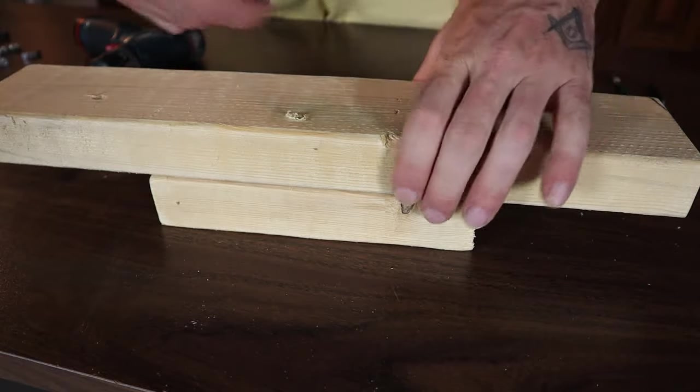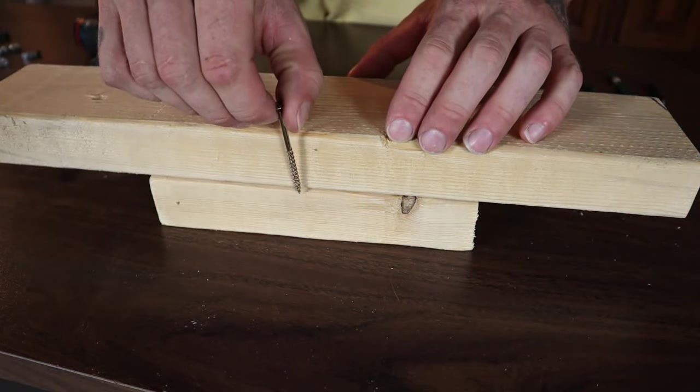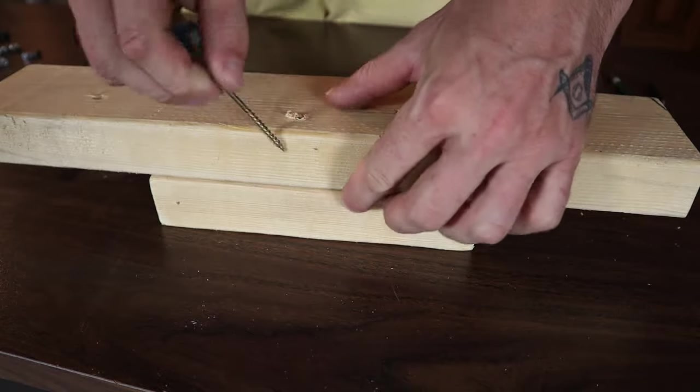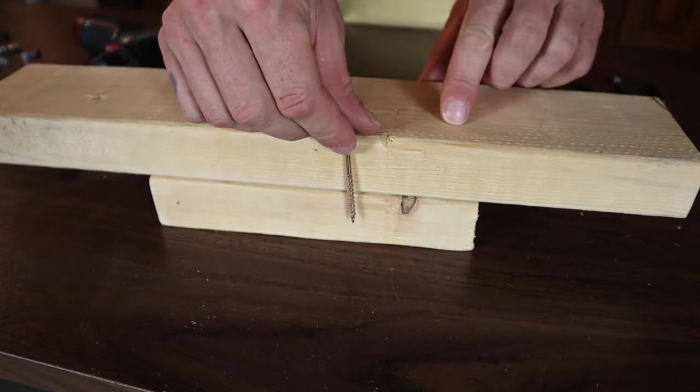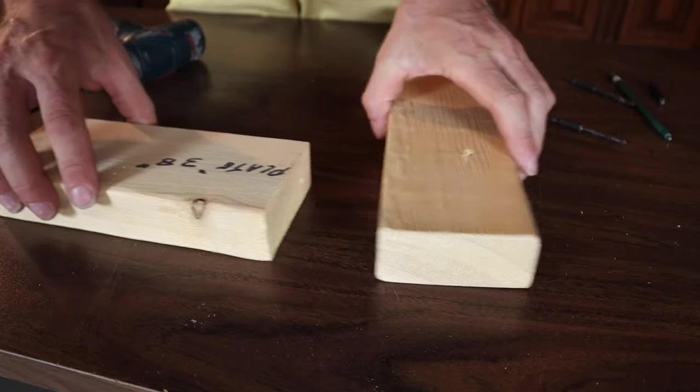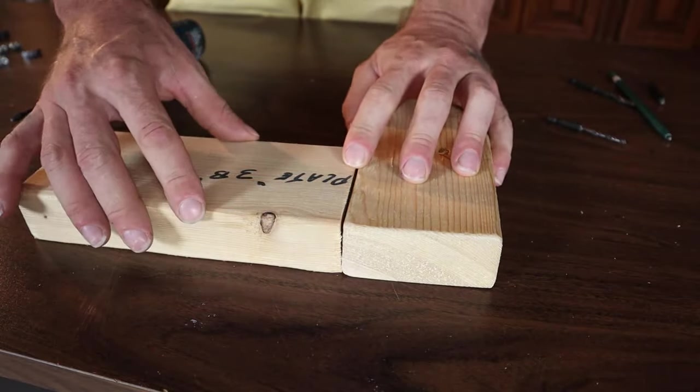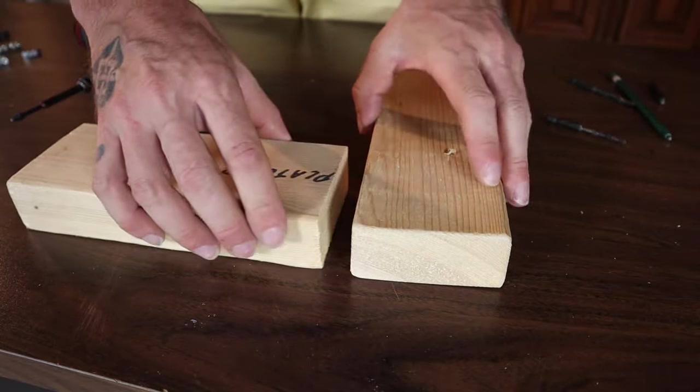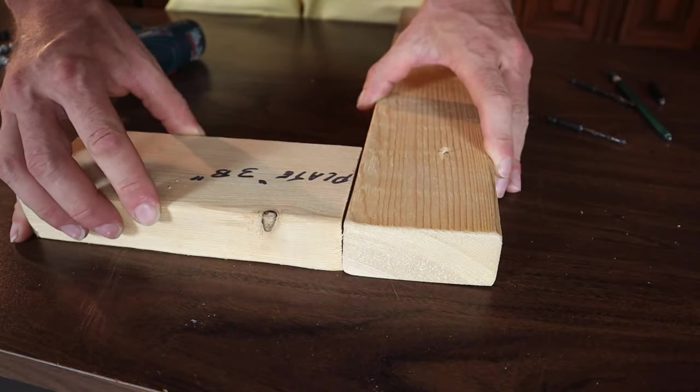If in any situation you find that when you put a screw in it tightens up and then it starts to get loose, that means it's stripped out in the bottom piece. You're going to want to remove that and move your screw over and get a fresh bite in a different spot, otherwise your pieces aren't going to stay together. For a really tight, solid, permanent connection, definitely think about gluing and screwing together. That's going to be the ultimate joint that you're ever going to have.